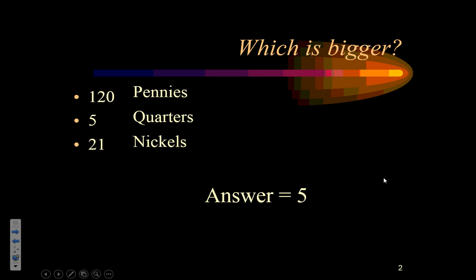Well, if I had 120 pennies, 5 quarters, and 21 nickels, 5 would be the largest. So, you need to understand which is bigger. I can't answer that question unless I know what my units are because my units actually give meaning to the number. And in many cases, they're even more important than the number is.